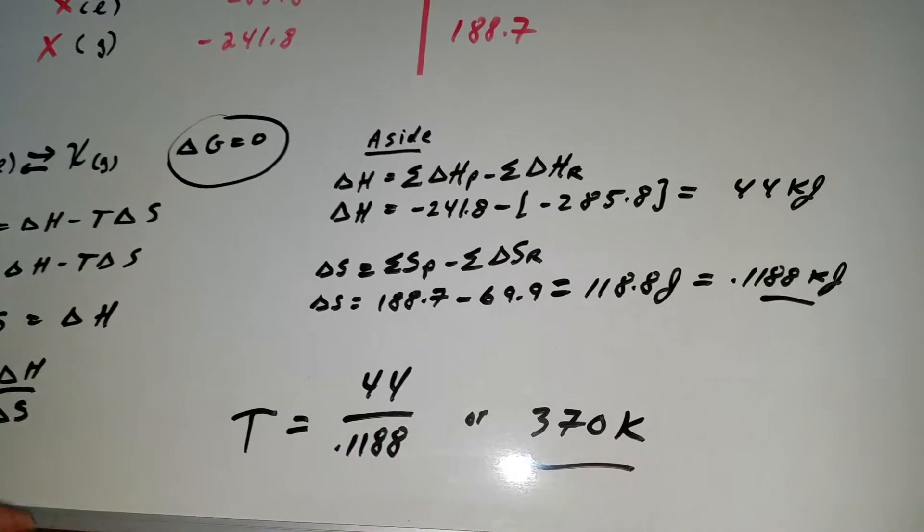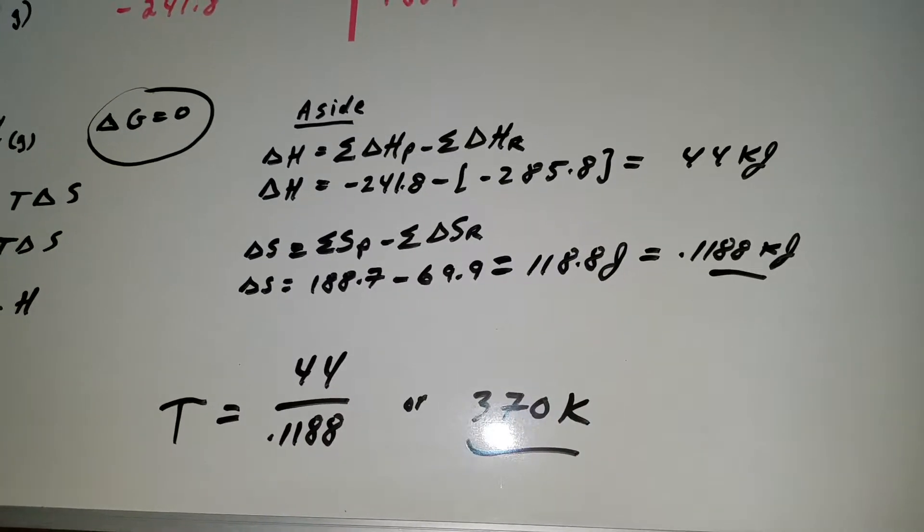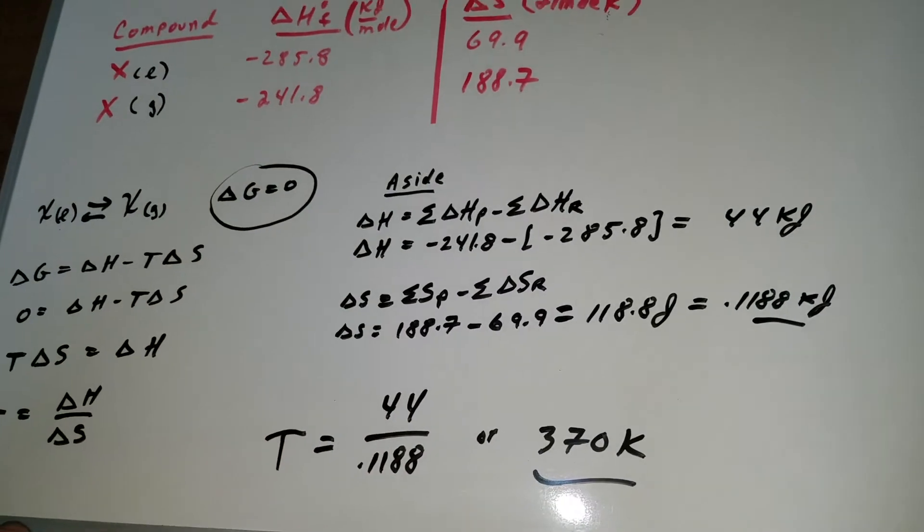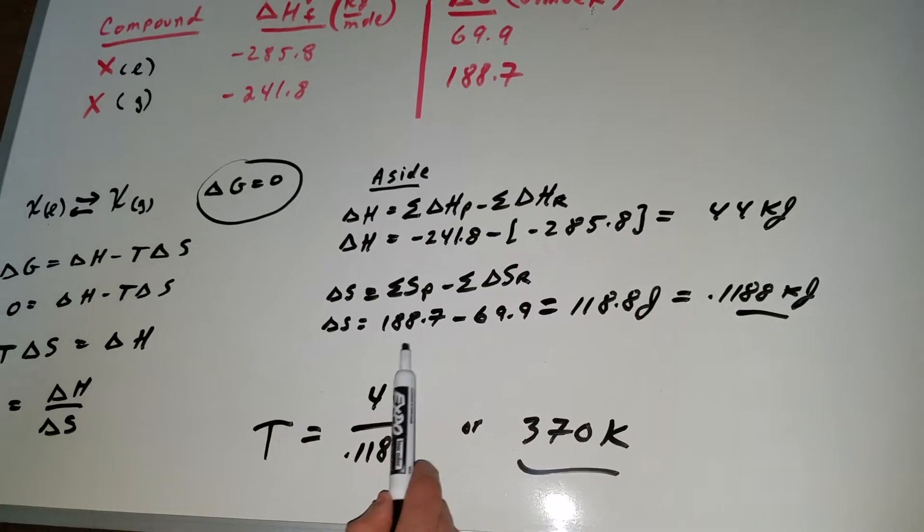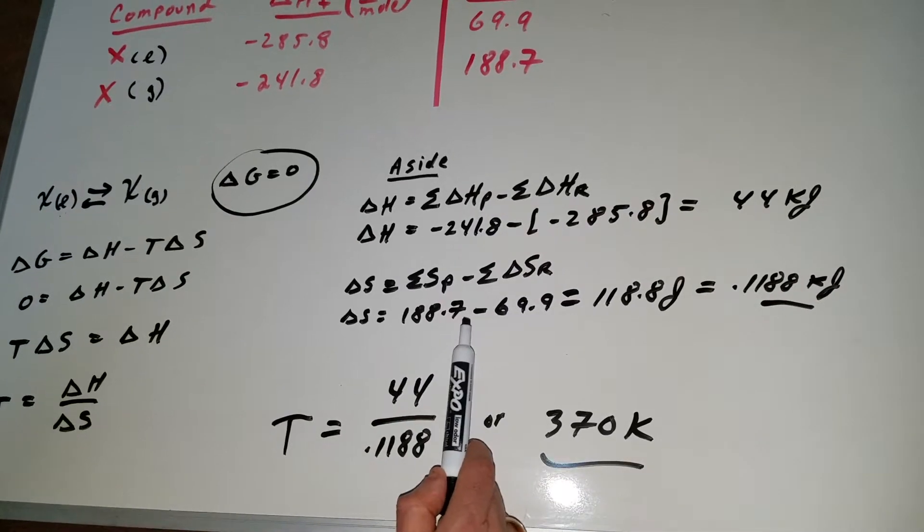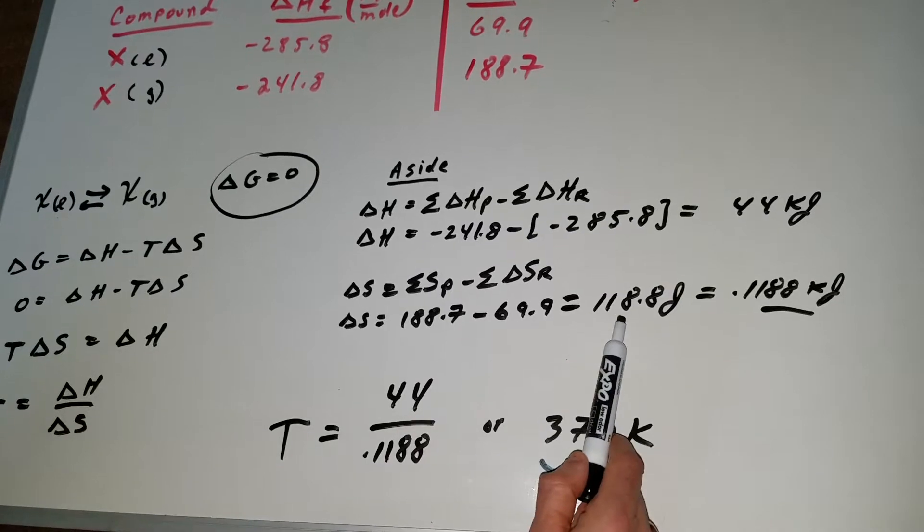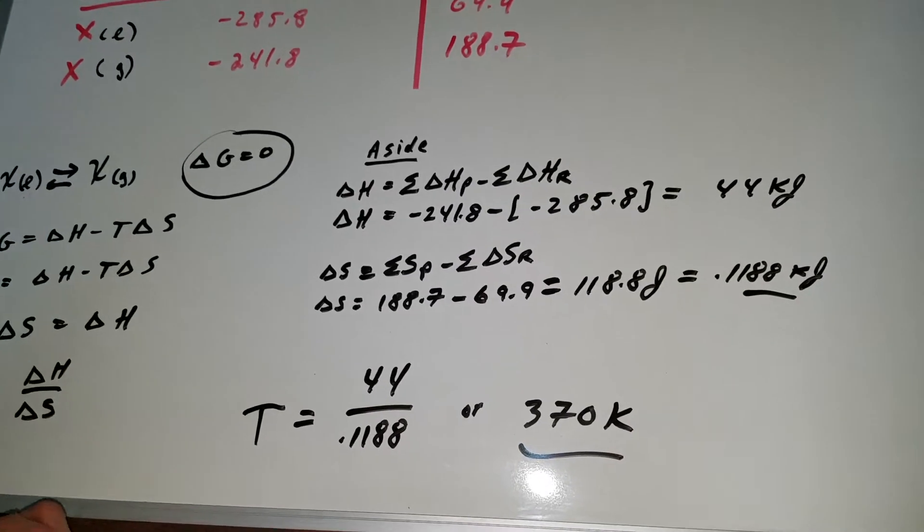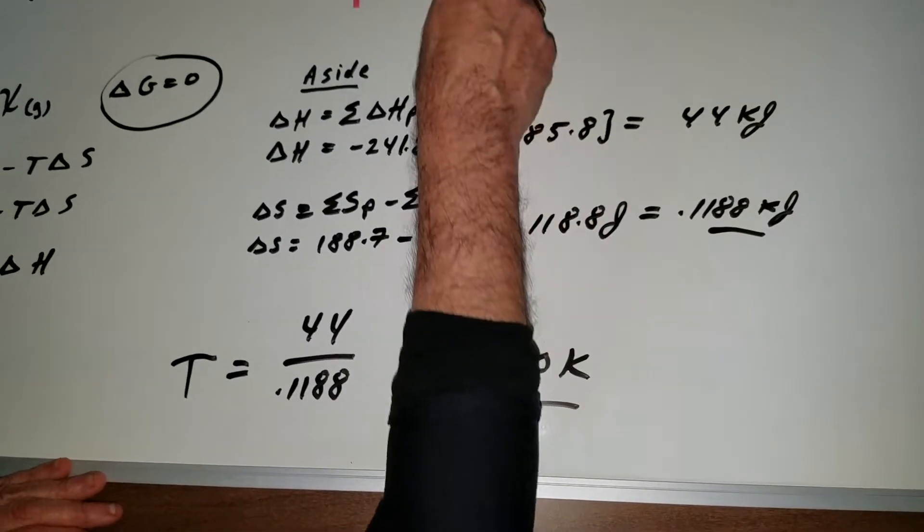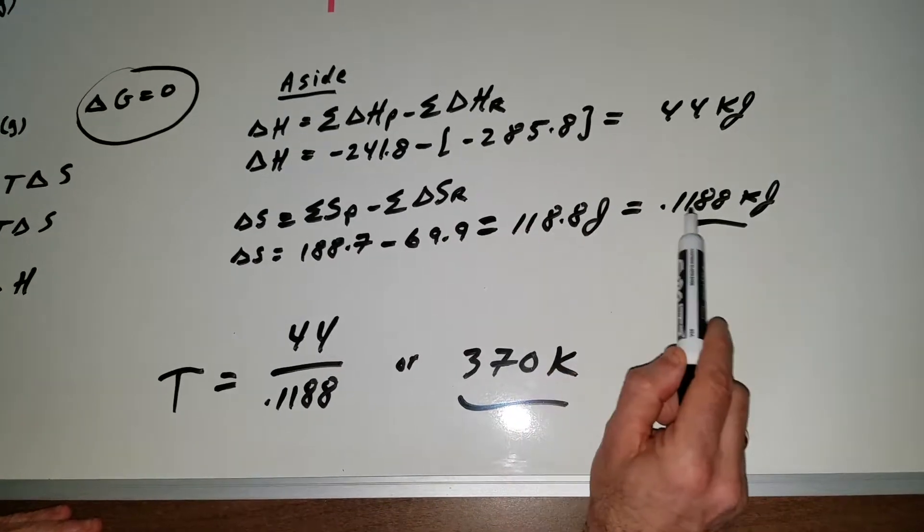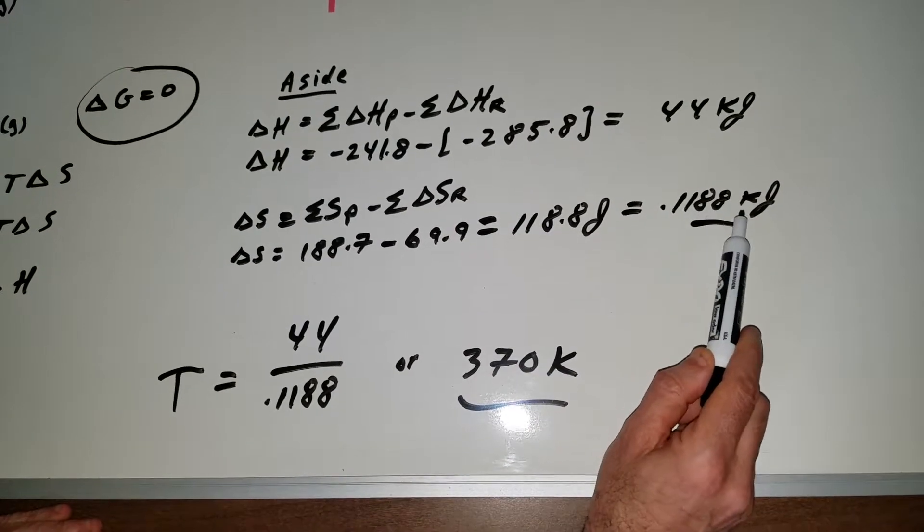Then the delta S is the sum of the products minus the reactants again. So we're going to take the product which is the gaseous form of the compound 188.7 minus the reactants which is the liquid minus the 69.9. That gave me 118 but that puts me in joules because we were working in joules. So 118.8 joules is 0.118 kilojoules.